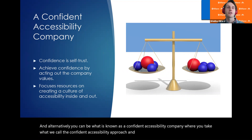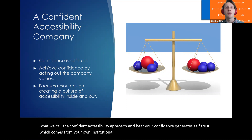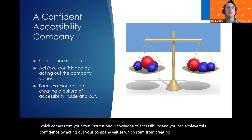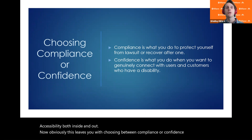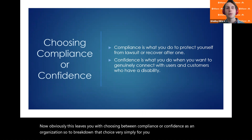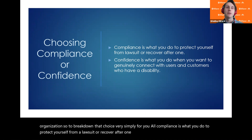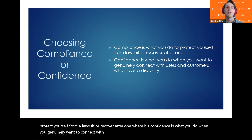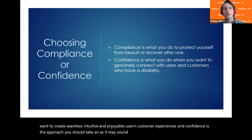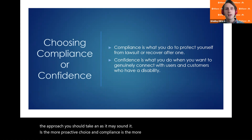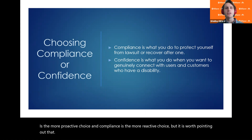Alternatively, you can take what is known as the confident accessibility approach. Here, your confidence generates self-trust, which comes from your own institutional knowledge of accessibility. You can achieve this confidence by acting out your company values, which stem from creating a culture of accessibility both inside and out. To break it down simply: compliance is what you do to protect yourself from a lawsuit or recover after one, whereas confidence is what you do when you genuinely want to connect with users and customers who have a disability and create seamless, intuitive, and enjoyable experiences. Confidence is the more proactive choice; compliance is the more reactive choice. Either approach will achieve some level of accessibility improvement.